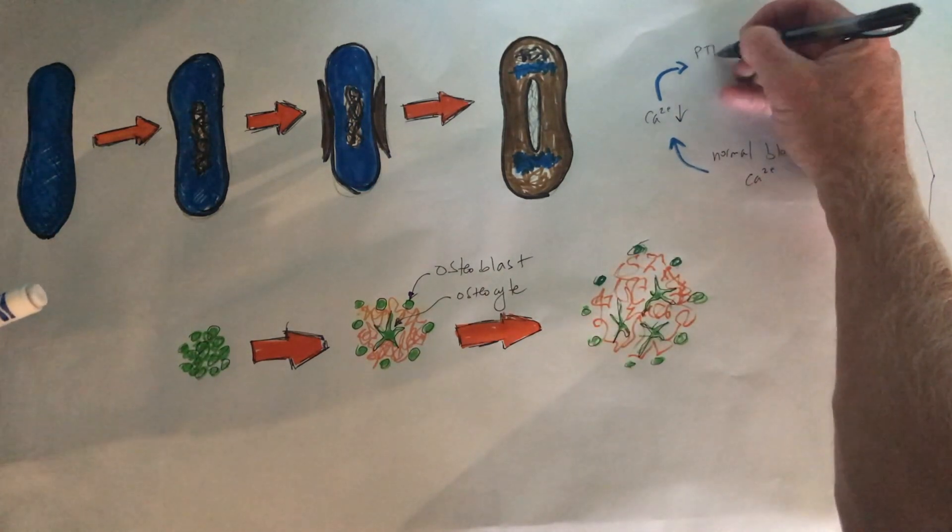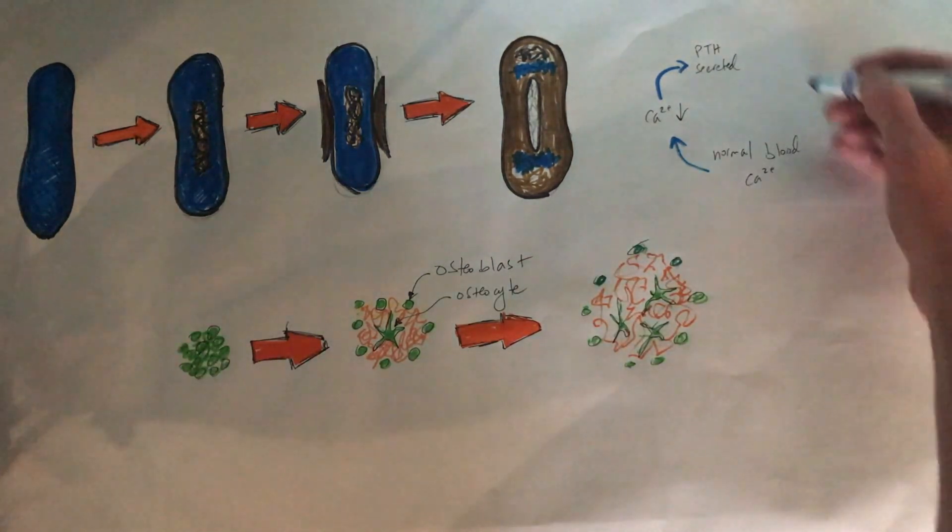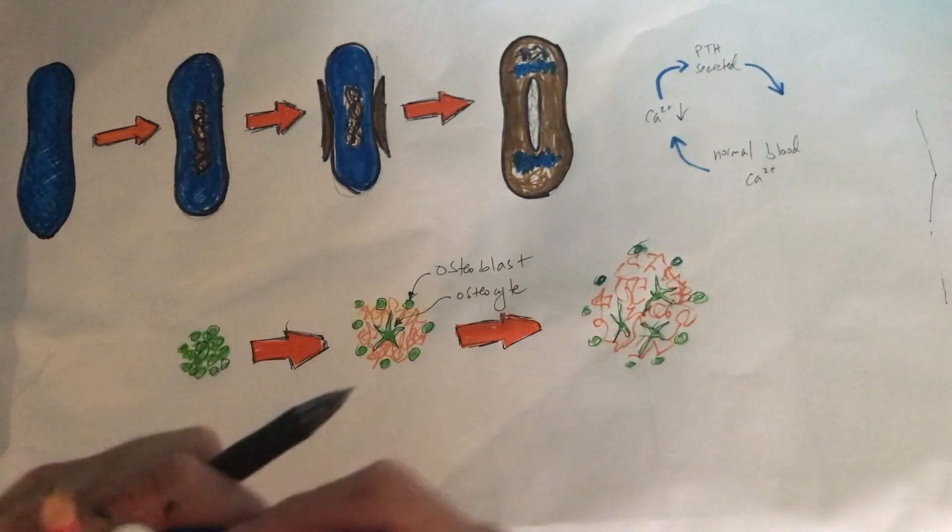When calcium levels are too low in the blood, an endocrine gland called the parathyroid gland will release a hormone called parathyroid hormone, PTH. The parathyroid gland is located in your neck. It's a series of little nodules that sit on top of your thyroid, hence parathyroid, which means around your thyroid. Your thyroid gland sits around your throat and larynx, on the lateral and anterior sides of your neck. When calcium is low, this parathyroid gland will release parathyroid hormone that's going to do a couple of different things.